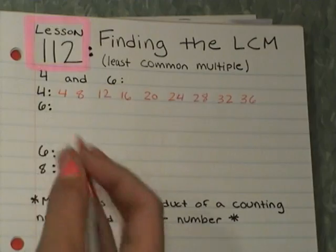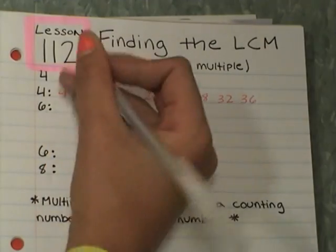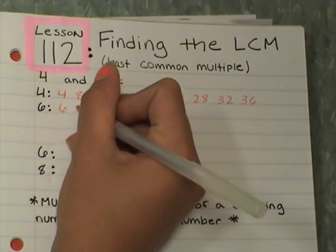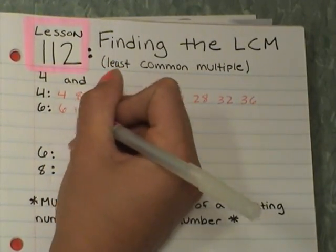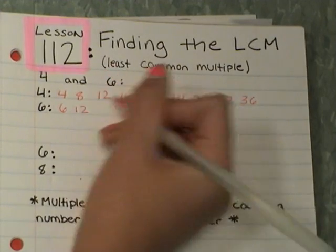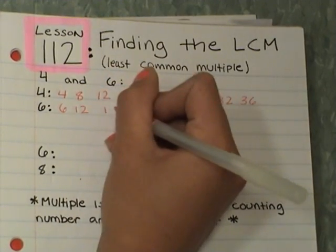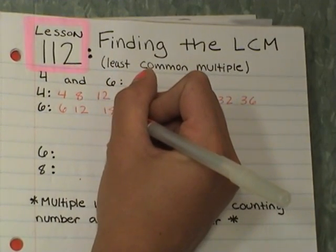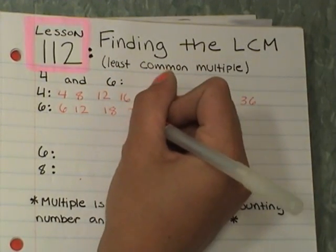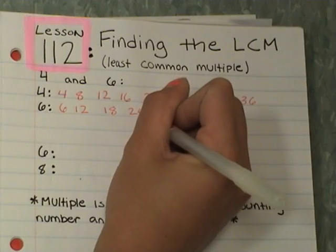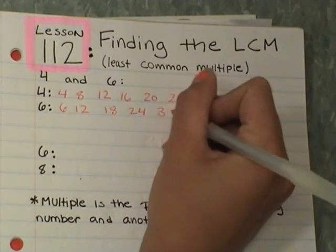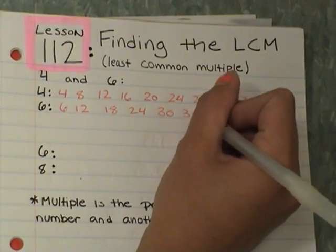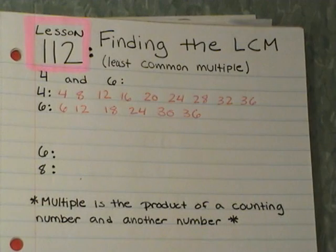I'm going to do the same thing for 6: 6 times 1 is 6, 6 times 2 is 12, 6 times 3 is 18, 6 times 4 is 24, 6 times 5 is 30, 6 times 6 is 36, and I can stop right there.